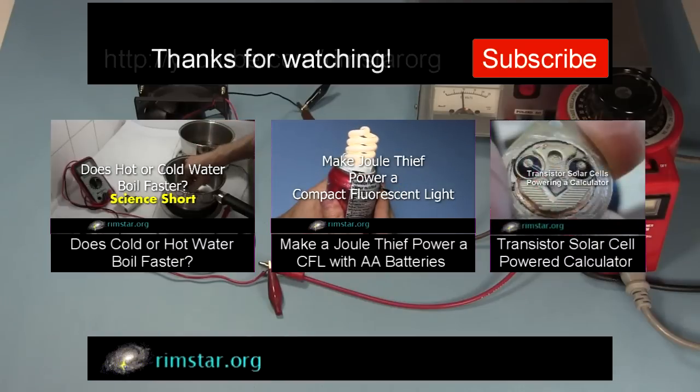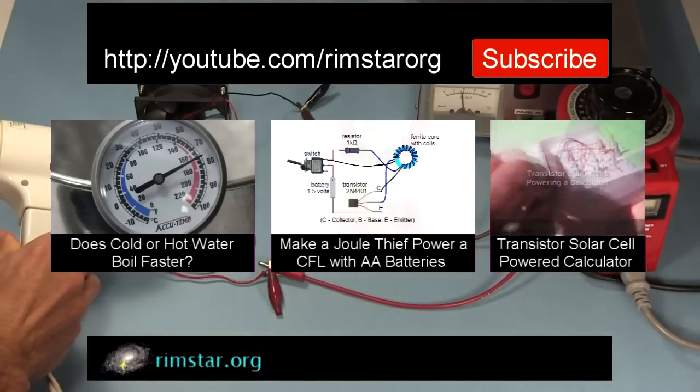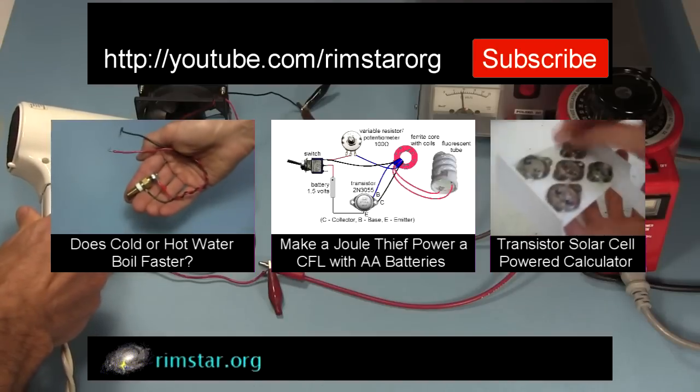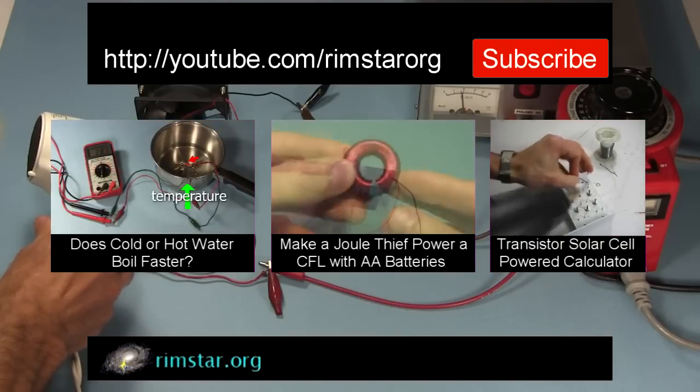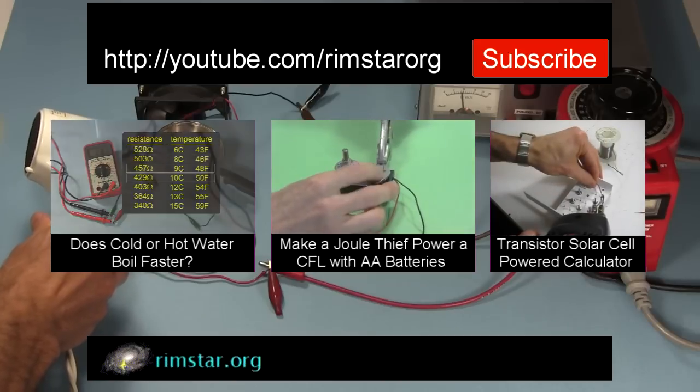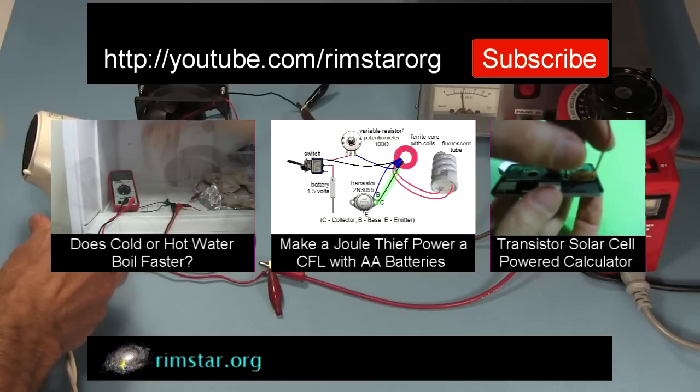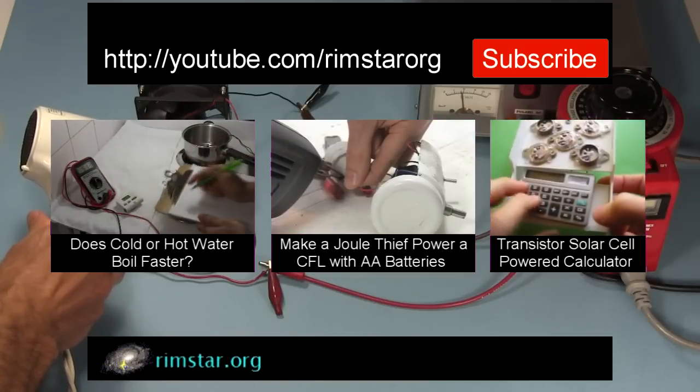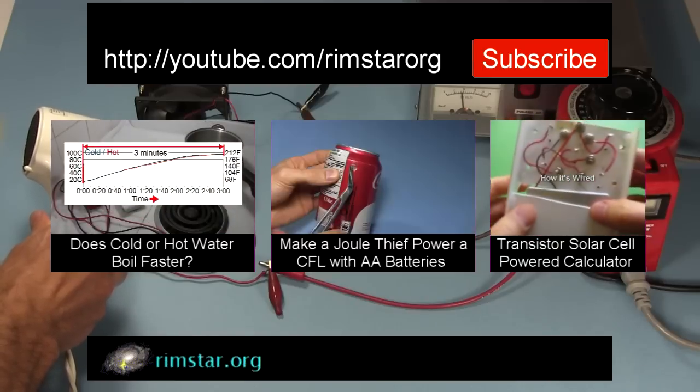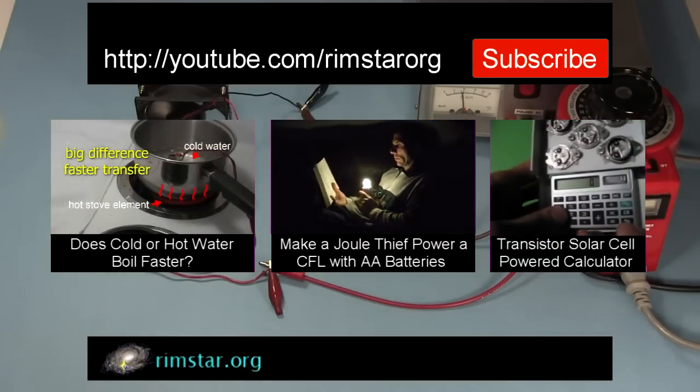Well, thanks for watching. See my YouTube channel, Rimstar Org, for more videos like this. That includes the video containing the experiments to test if cold water boils faster than hot water and why people might think that, another on how to power a compact fluorescent light using just two AA batteries, and one on how to make a solar panel out of transistors, in this case to power a calculator. And don't forget to subscribe if you like these videos, or give a thumbs up, or leave a question or comment below. See you in a bit!